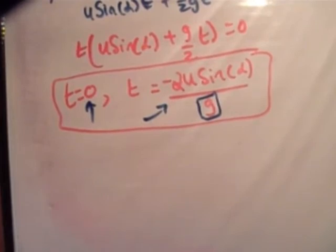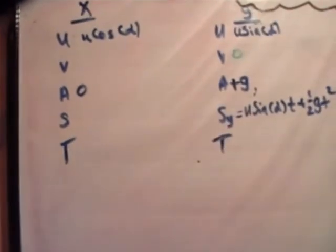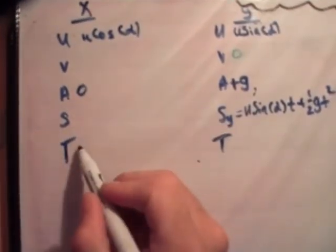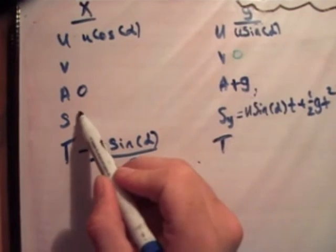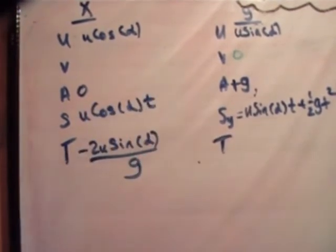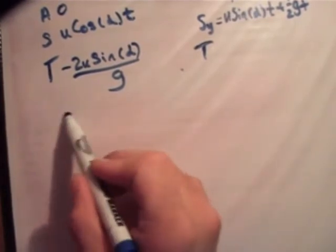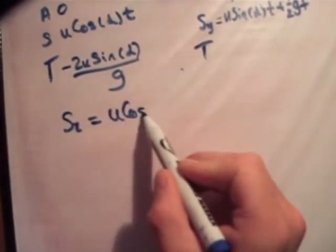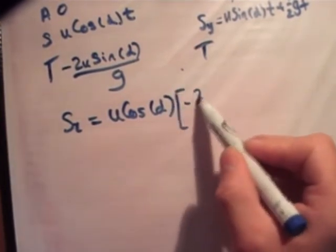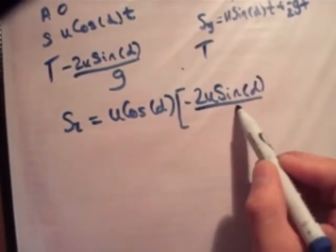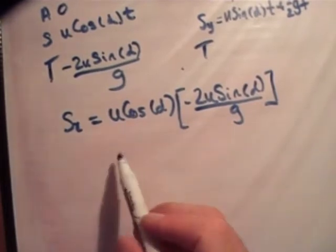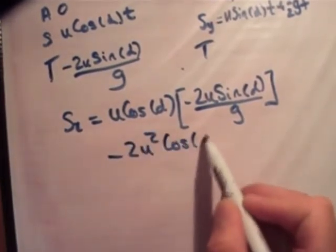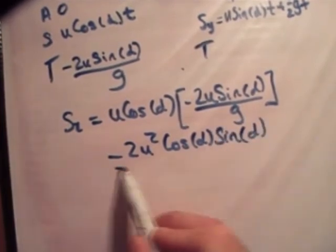So, all we need to do now is plug that into our expression for the range. So, s sub x is equal to ut plus a half a t squared. This is 2u sine alpha over g. So, s sub x is u cos alpha t. Put the two of them together. And we're going to get minus 2u squared cos alpha sine alpha over g.